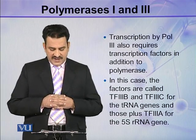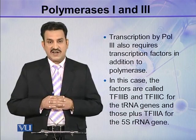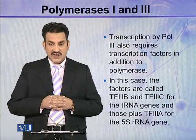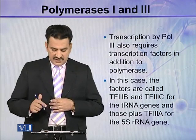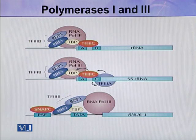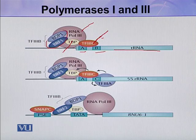In this case the factors are called TF3B and TF3C for the tRNA genes, and TF3A for the 5S rRNA gene. In the diagram, this is the tRNA gene with box A and box B. The orange complex is TF3C, this is polymerase 3, this is TBP, and these are the subunits of TF3B.